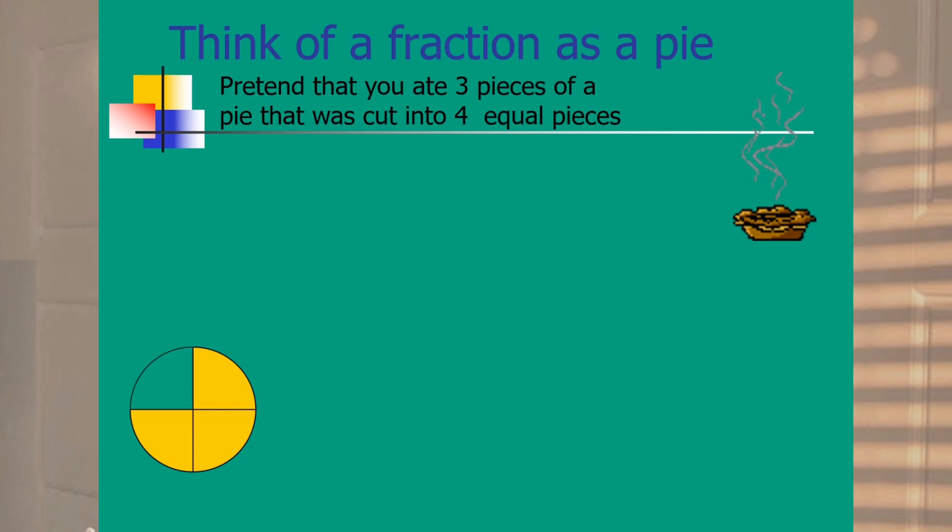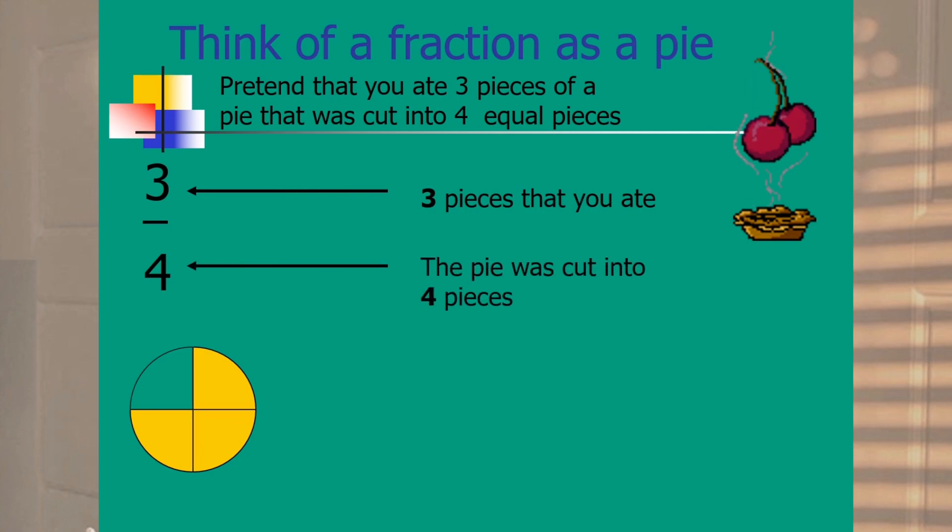Think of a fraction as a pie. Pretend that you ate three pieces of a pie that was cut into four equal pieces. So we write it as three fourths. 3 is the number of pieces that you ate and 4 represents the total number of equal parts that the pie was cut into.